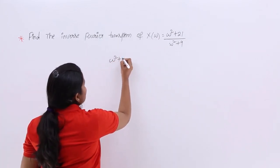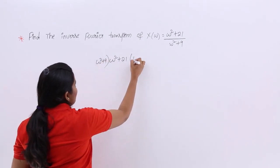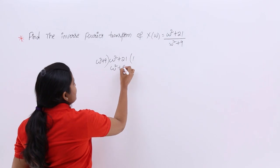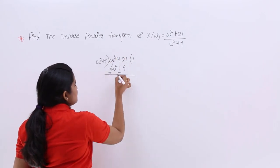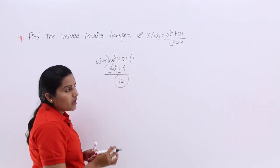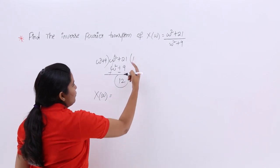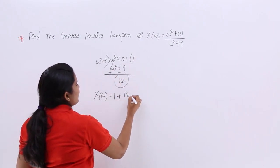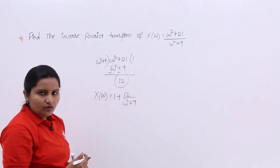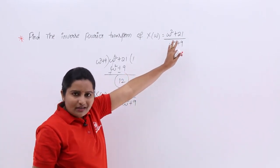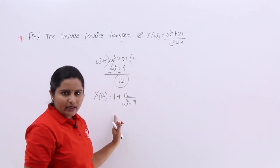So dividing omega square plus 21 by omega square plus 9, one time: omega square plus 9. This gives a remainder of 12. Then I can write x of omega as 1 plus 12 divided by omega square plus 9. By using one division, I make this equation into a strictly proper equation.